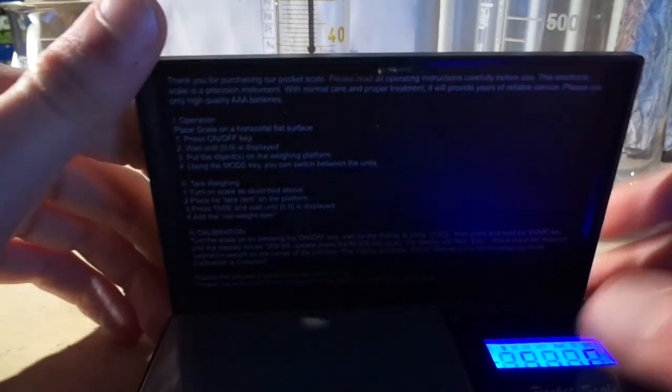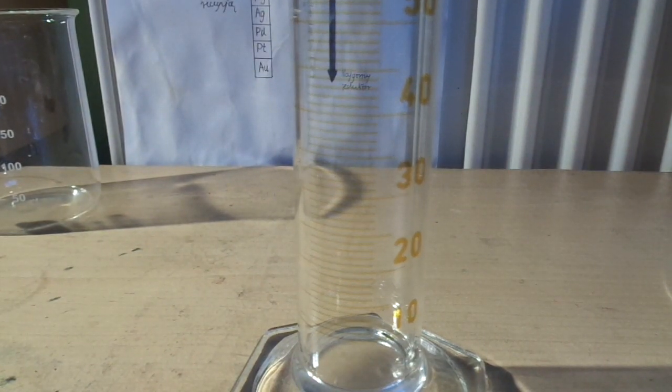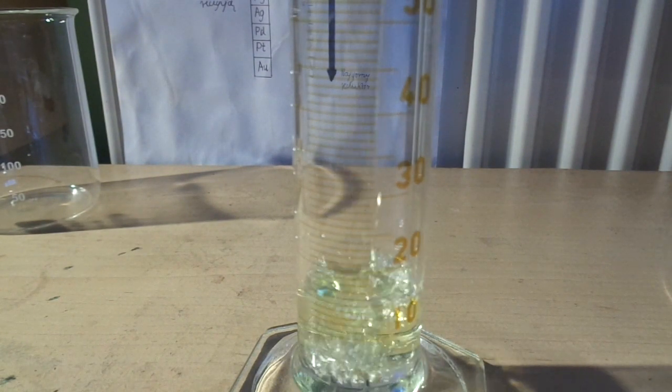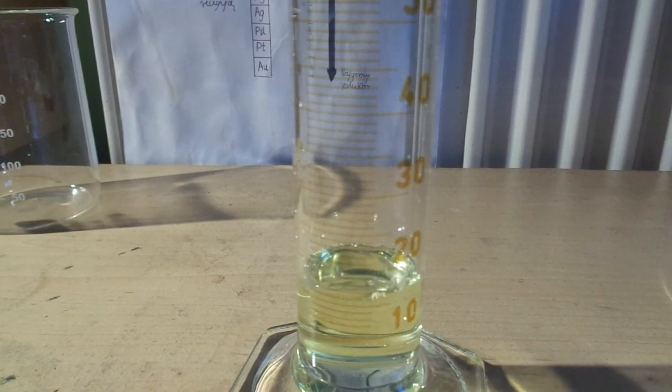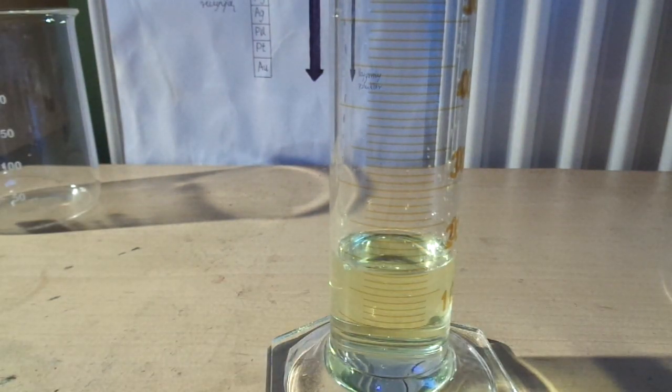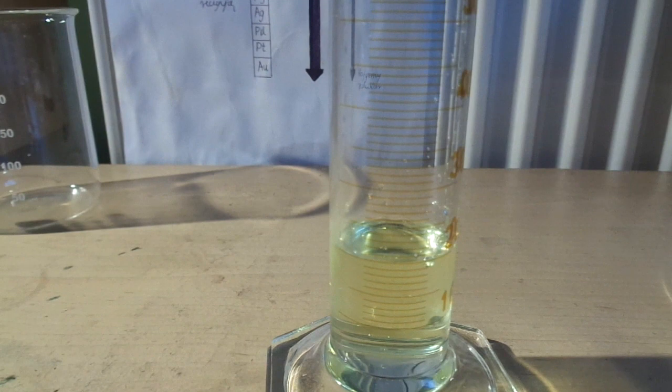Next thing, you will need hydrochloric acid, so I will measure that in the graduated cylinder. You will need 16 milliliters of concentrated 30% hydrochloric acid. I still need a little bit of an excess here. Especially because my hydrochloric acid is very impure. As you can see, it has a yellow color, which shouldn't happen.